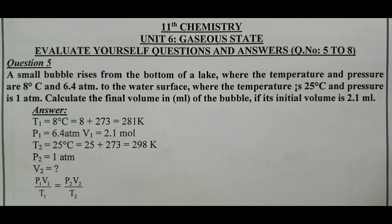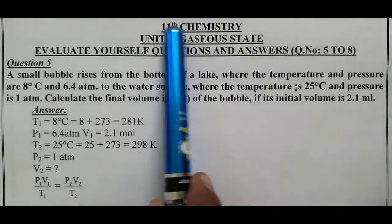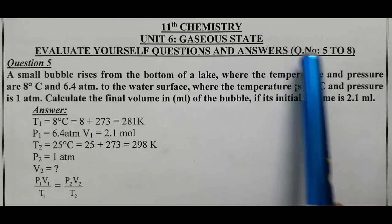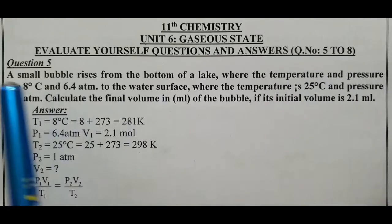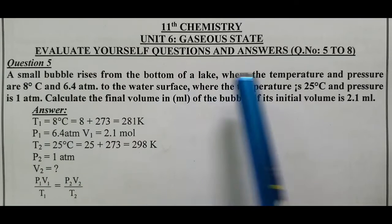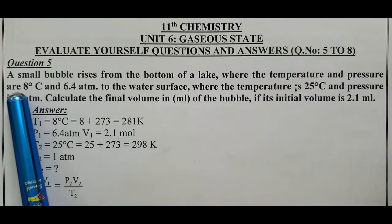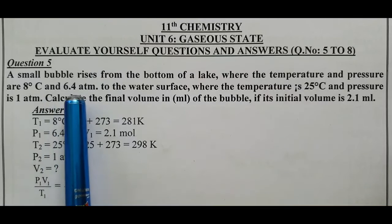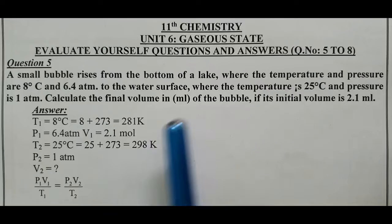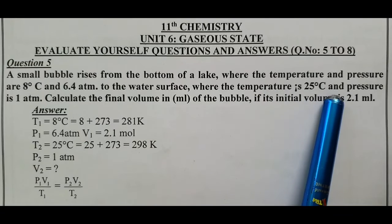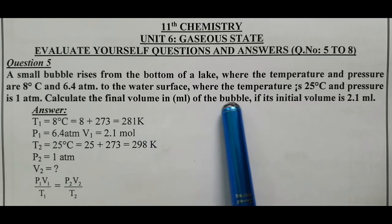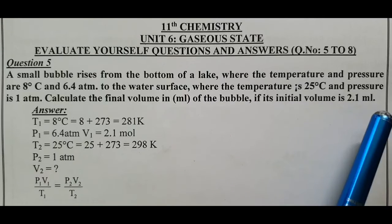Peace be upon you and your family. 11th Chemistry, Unit 6, Gaseous State — Evaluate Yourself, Question and Answer. Questions 5 to 8 will be discussed here. Question number 5: A small bubble rises from the bottom of a lake where the temperature and pressure are 8°C and 6.4 atm, to the water surface where the temperature is 25°C and pressure is 1 atm. Calculate the final volume in mL of the bubble if its initial volume is 2.1 mL.